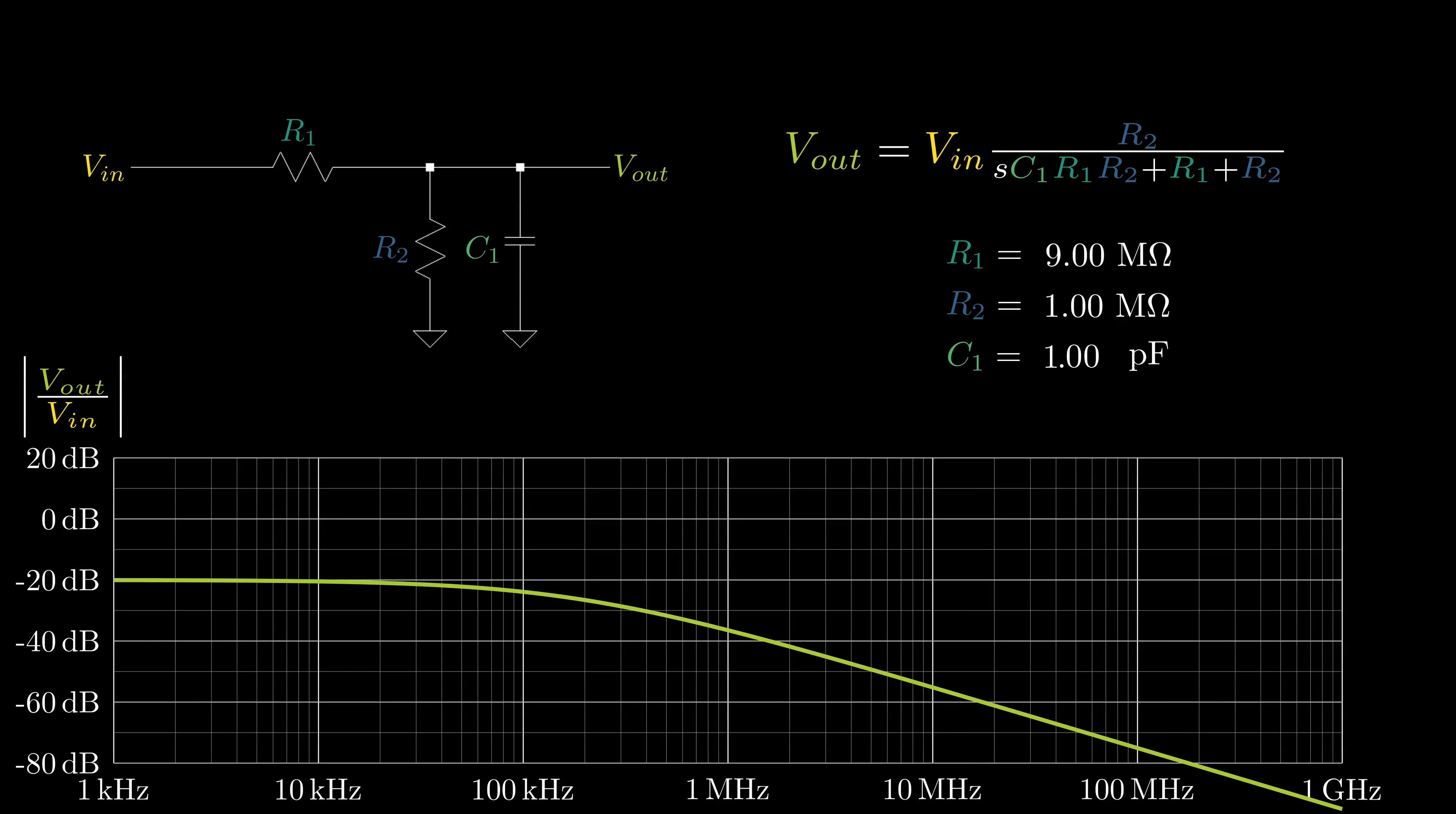Now, we have some frequency dependent gain. When we plot the gain, we can see that we have constant attenuation at low frequencies, and then a first order roll off at high frequencies. The larger C1 is, the lower the cutoff frequency.